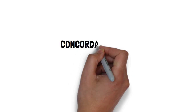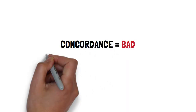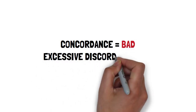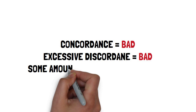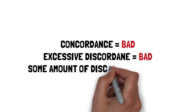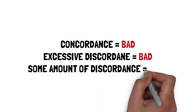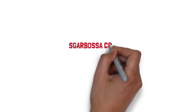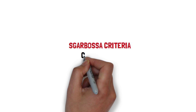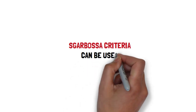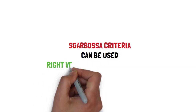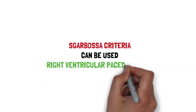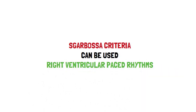So, the take-home message is: concordance — bad; excessive discordance — bad; some amount of discordance — good. Please note that the Sgarbossa criteria can also be used in cases of right ventricular paced rhythms.